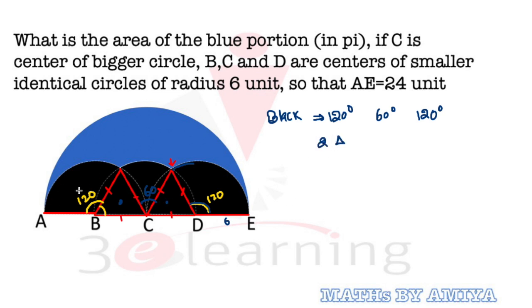So the black part is nothing but 120 degree sector, 60 degree sector, and 120 degree sector with two equilateral triangles. So we have total is, since area theta upon 360 pi r square, pi r square aapka common hai. So total is nothing but 300 degree ka sector banega out of 360 into pi r square.